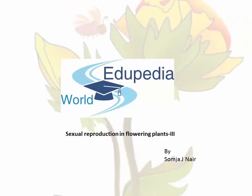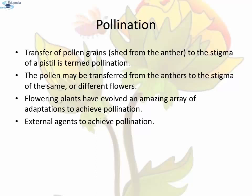Welcome to edupedia world.com. This is Somjaj, your online tutor. The chapter is sexual reproduction in flowering plants. In the last video we have already discussed about the female and male reproductive structures of the plant. In the preceding sections, we have already learnt that the male and female gametes in flowering plants are produced in the pollen grain and embryo sac respectively. As both types of gametes are non-motile, they have to be brought together for fertilization to occur, and pollination is that mechanism to achieve this objective.